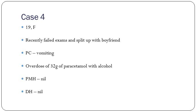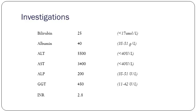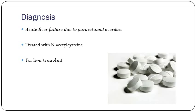A 19-year-old student who recently failed her exam and split up with her boyfriend comes to A&E unconscious and vomiting. She's taken 32 grams of paracetamol mixed with alcohol. The most important feature on the blood test is the INR — it's so high you need to monitor it. Treatment: N-acetylcysteine for acute liver failure due to paracetamol overdose. Get in touch with the liver unit, and they'll decide whether or not she's for a liver transplant.